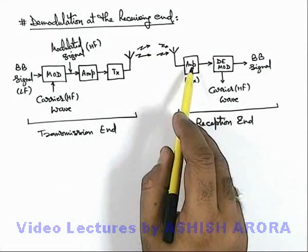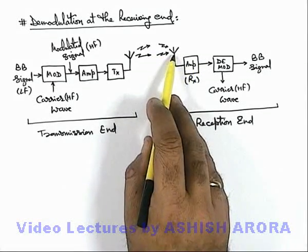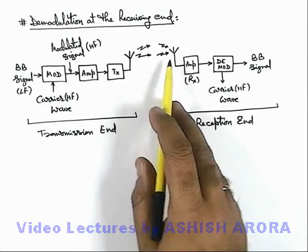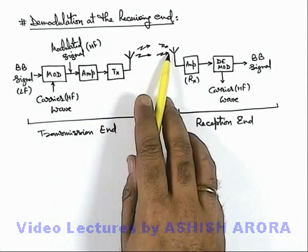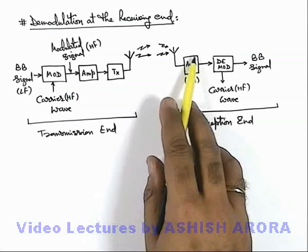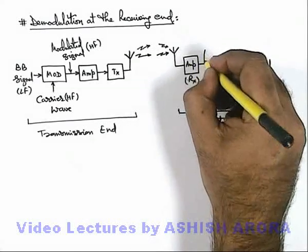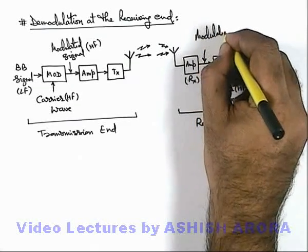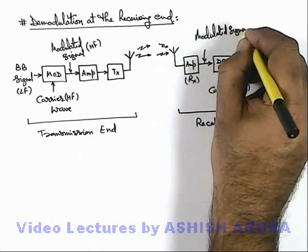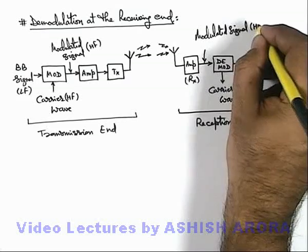Now at high frequency again, the receiver side antenna is also of limited or small size length which receives the signal. And first the signal is amplified within the receiver, and here this is the modulated signal which is received by the receiver which is a high frequency.